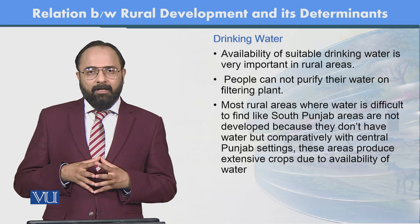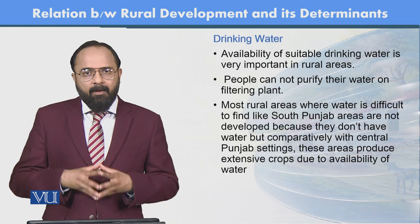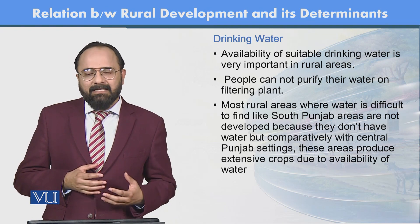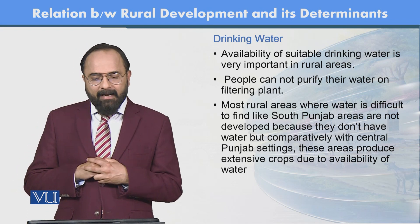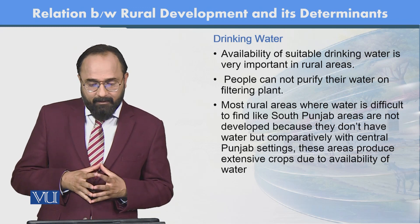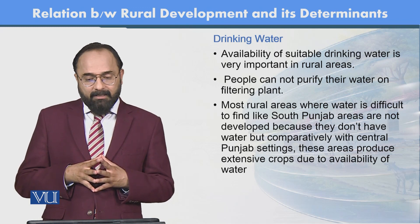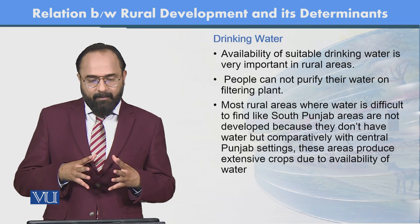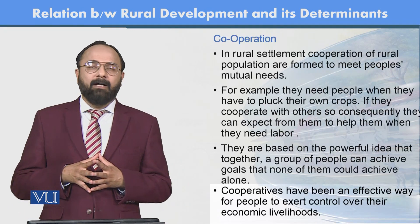جن areas میں drinking water کی سہولت بہتر ہوگی، water-borne diseases کم ہوں گی اور پانی صاف ستھرا ہوگا — وہ بھی rural development کے لیے matter کرتا ہے۔ Most rural areas where water is difficult to find, like southern Punjab, are not developed because they don't have water — comparatively, central Punjab produces extensive crops due to availability of water.